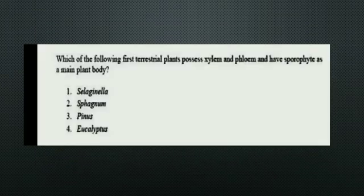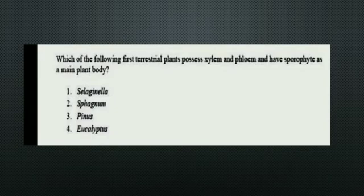The next question: Which of the following is the first terrestrial plant to possess xylem and phloem and having the sporophyte as the main plant body? The options are Selaginella, Sphagnum, Pinus, and Eucalyptus. The right answer is Option 1, Selaginella.